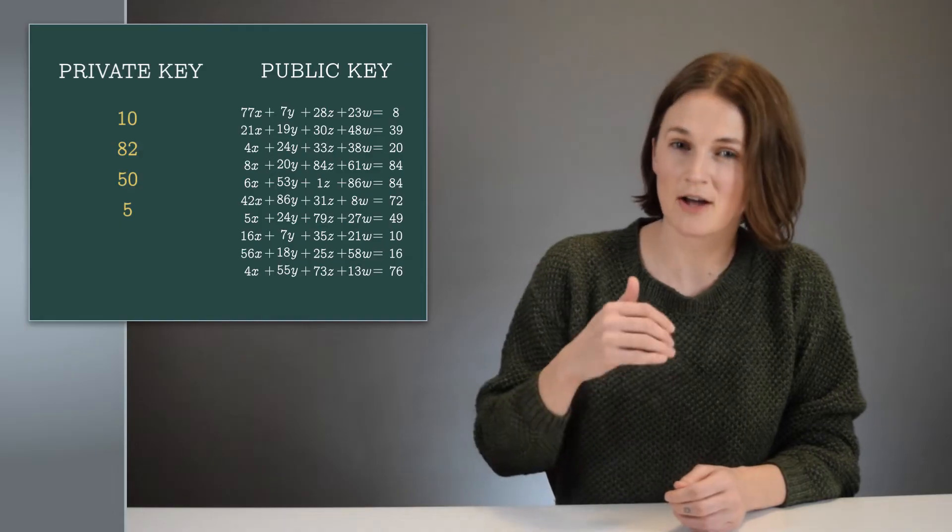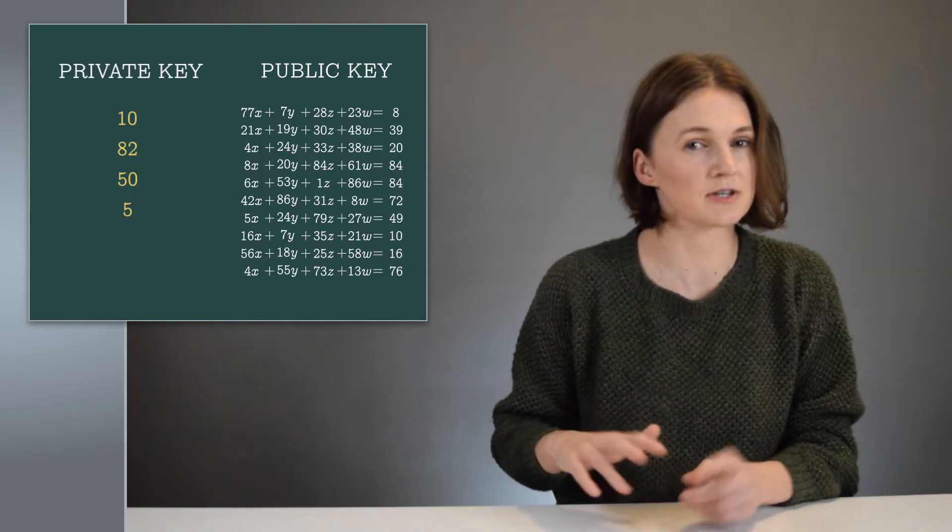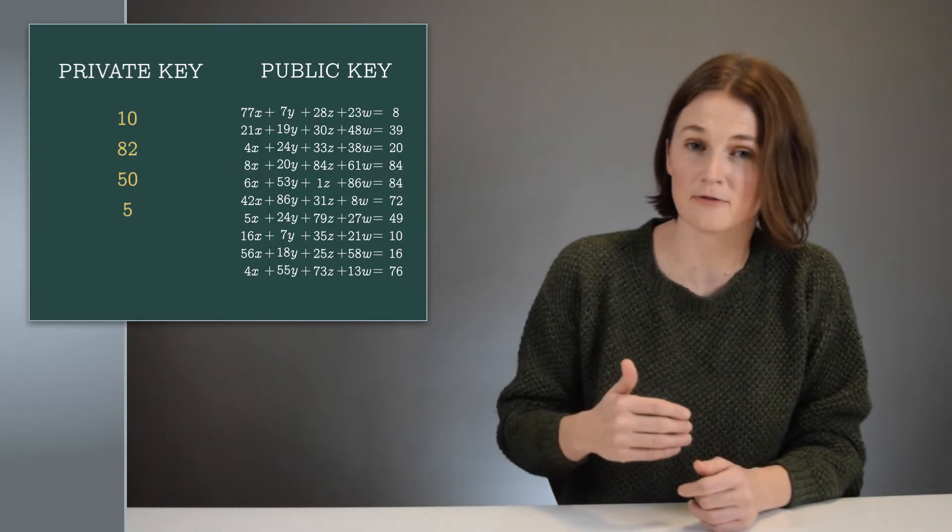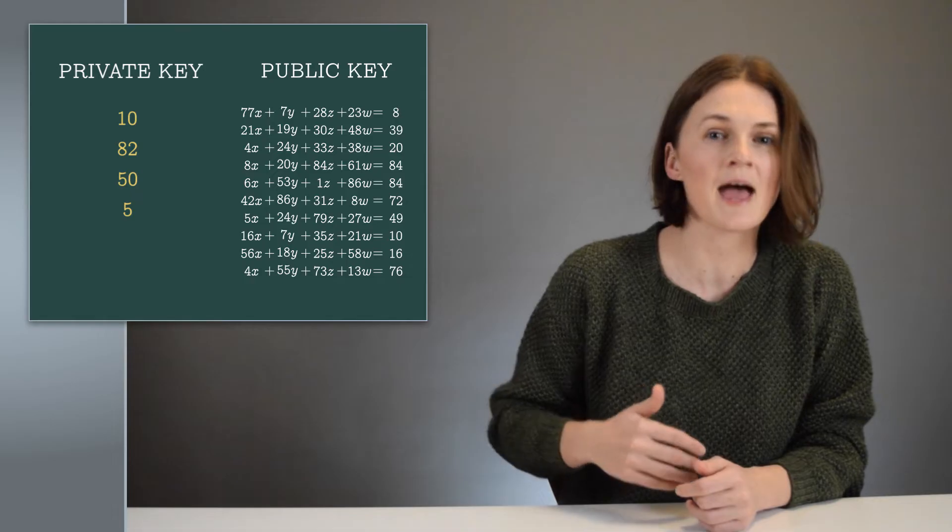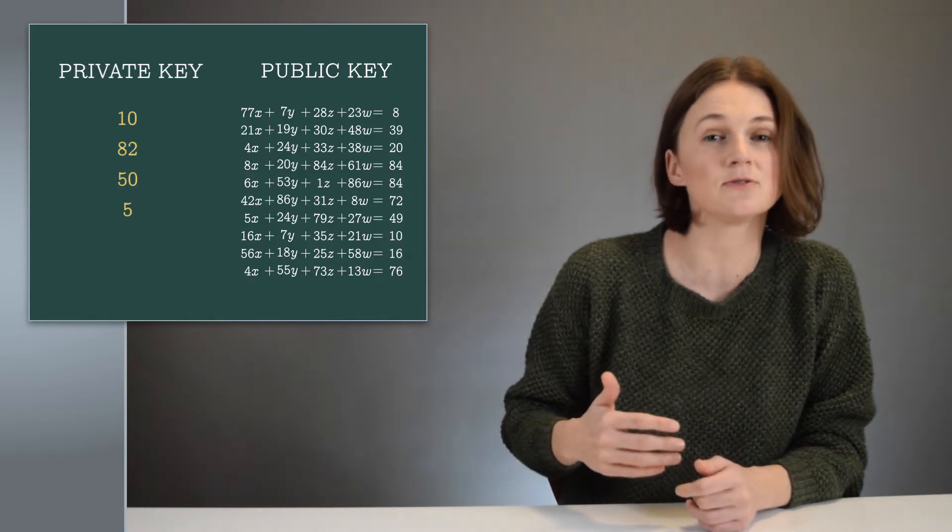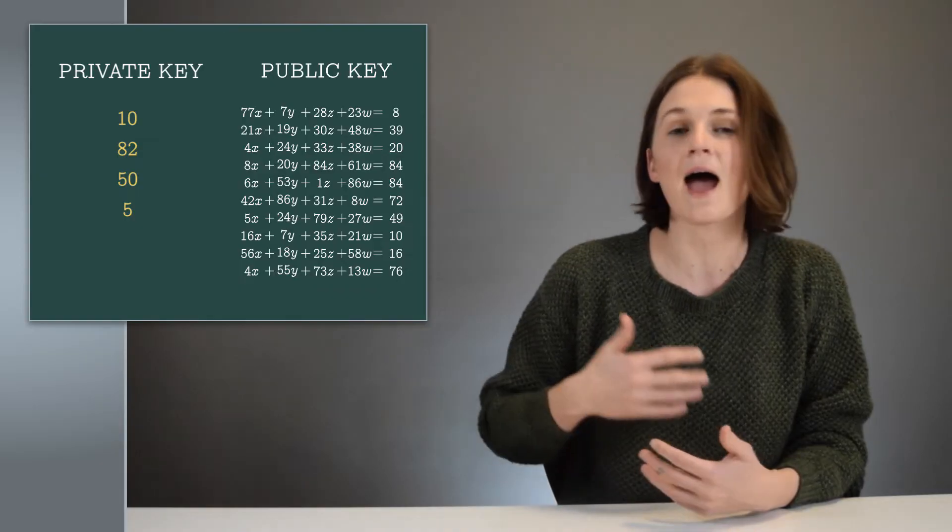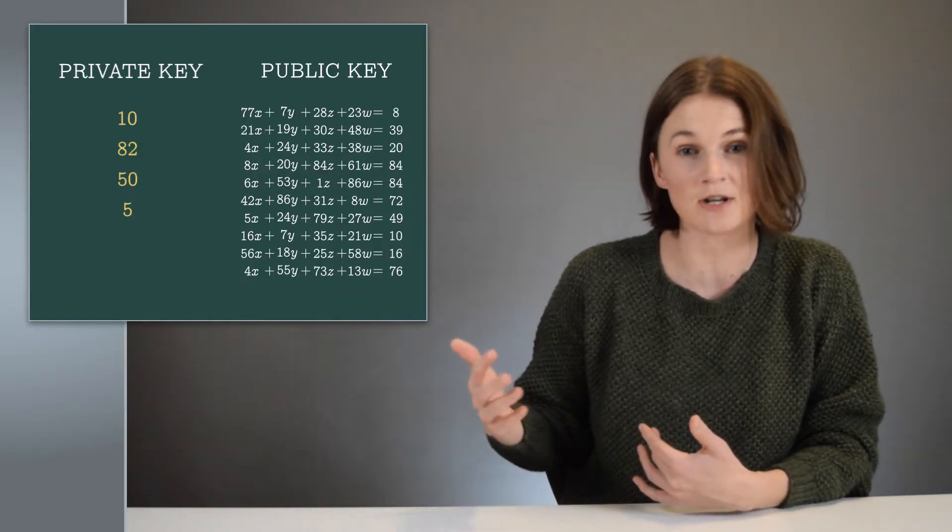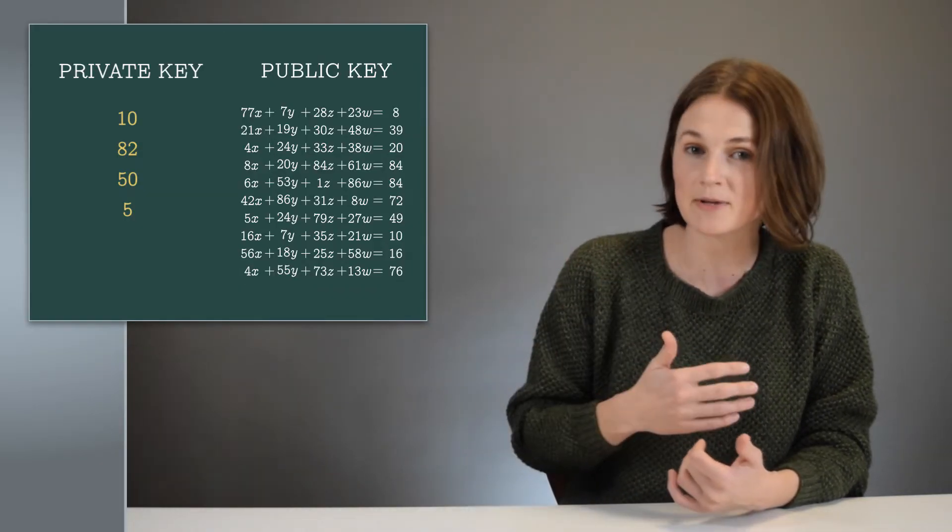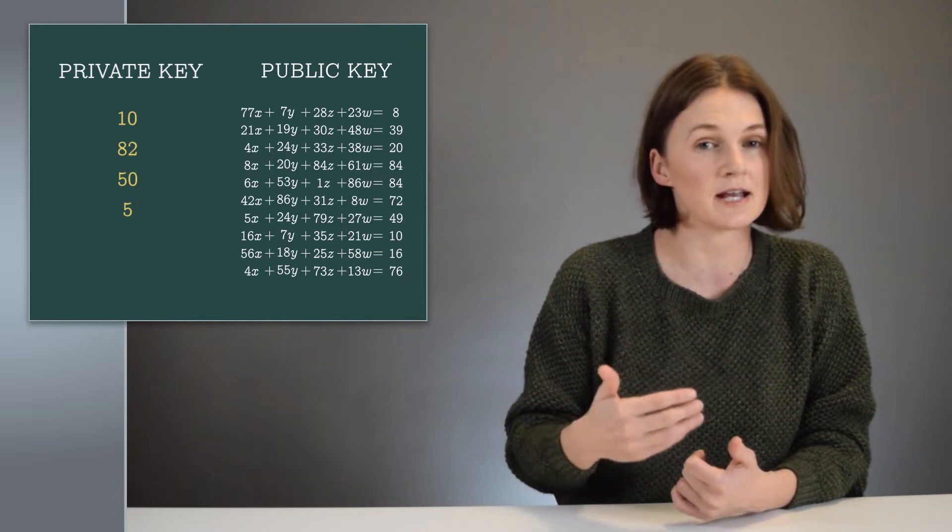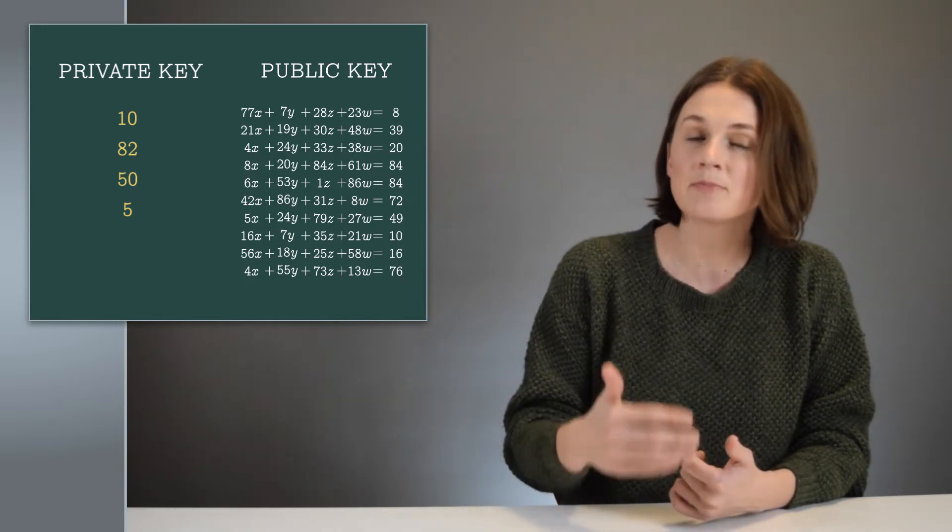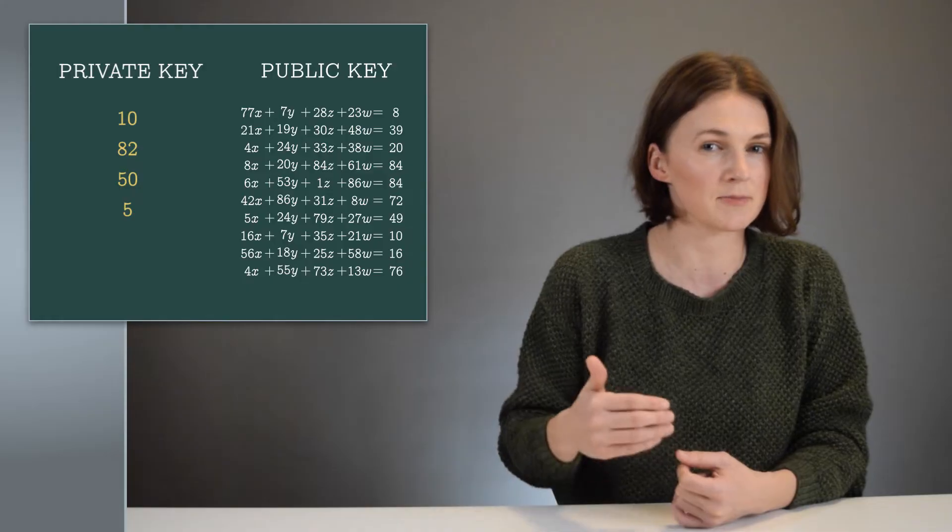So we have a hard math problem, discovering the real solution to an error-filled system of linear equations. And this math problem can be used as the basis for a public key cryptography system. Alice has some secret information, a vector, and there's some public information, the error-containing equations. How can Bob use this setup to send an encrypted message?